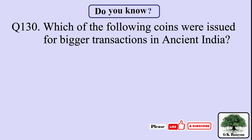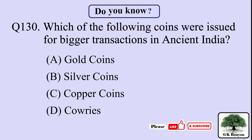Question 130. Which of the following coins were issued for bigger transactions in ancient India? Your options are: A. Gold coins, B. Silver coins, C. Copper coins, D. Cowrie shells.